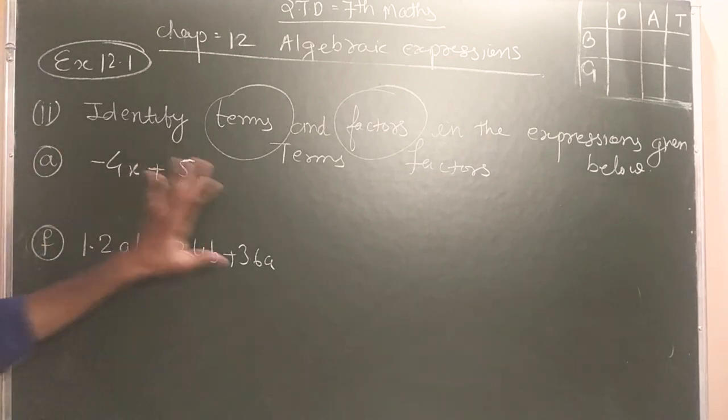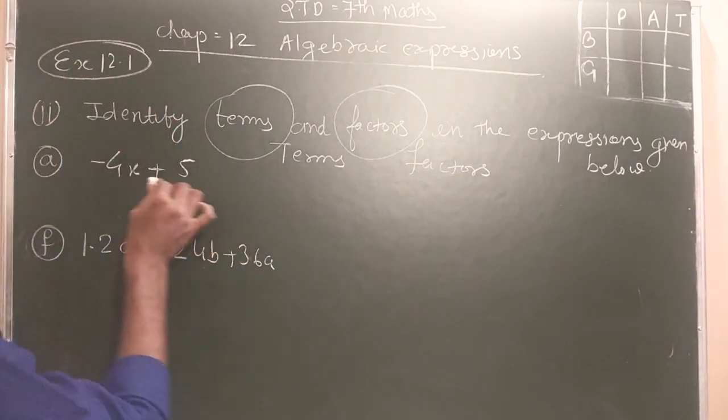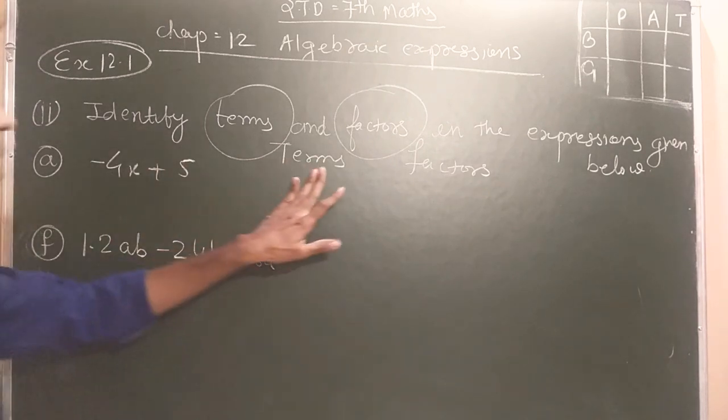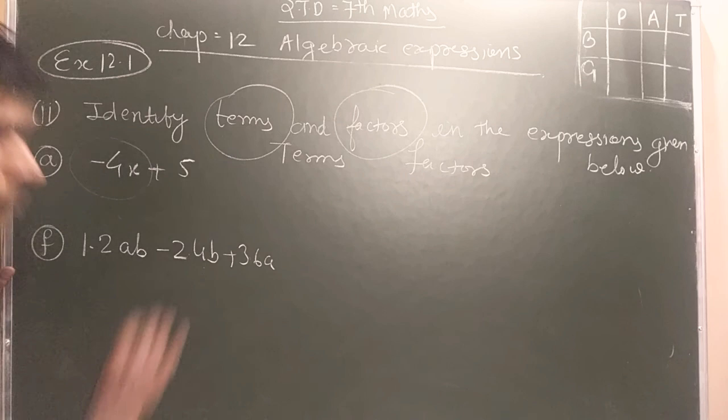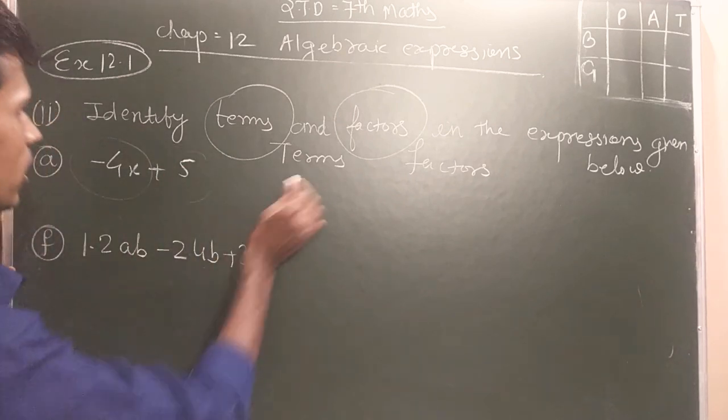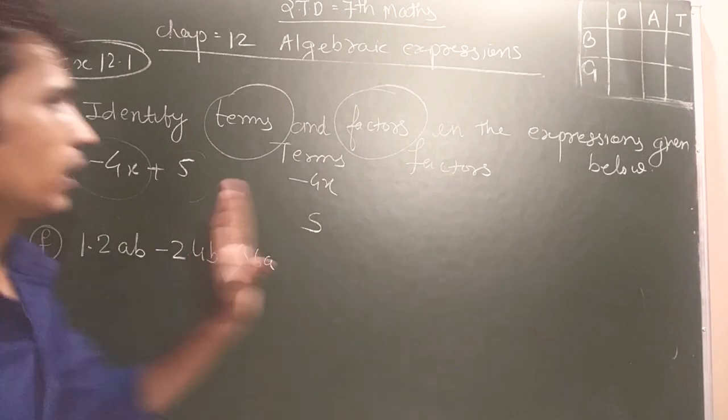Students, here is one expression. Here I have taken two expressions and I have to find out terms and factors. Here student, this is first term, this is second term. Term is 2, minus 4x and 5.